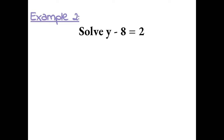Example 2: Solve y minus 8 equals 2. To solve for y, we want to get it by itself, so I need to get rid of the minus 8 by doing the inverse operation, which is adding 8. Whatever we do to one side of the equal sign, we always have to do to the other side. These cancel out, and we get y equals 2 plus 8, which is 10.